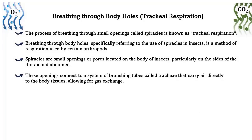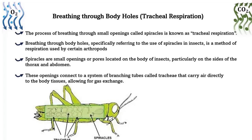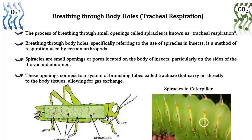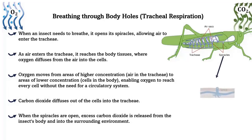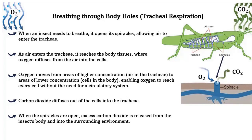Breathing through body holes: the process of breathing through small openings called spiracles is known as tracheal respiration. This is a method of respiration used by certain arthropods. Spiracles are small openings located on the body of an insect, particularly on the sides of the thorax and abdomen. These openings connect to a system of branching tubes called tracheae that carry air directly to the body tissues. When an insect needs to breathe, it opens its spiracles allowing air to enter the tracheae. Oxygen diffuses from the air into the cells — moving from areas of higher concentration to lower concentration — enabling oxygen to reach every cell without the need for a circulatory system. Carbon dioxide diffuses out of the cells into the tracheae and is released through the open spiracles.